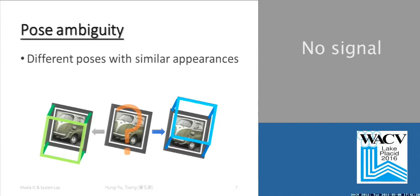Another problem in pose estimation is the pose ambiguity, which refers to different poses with similar appearances.